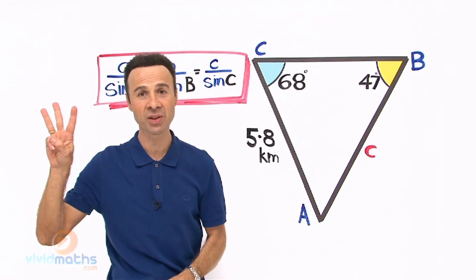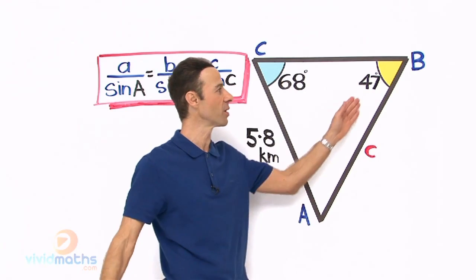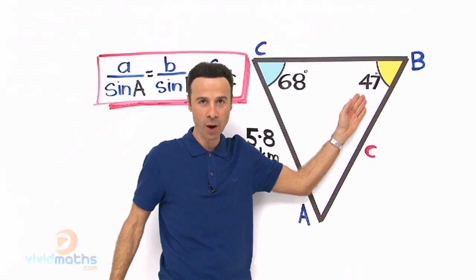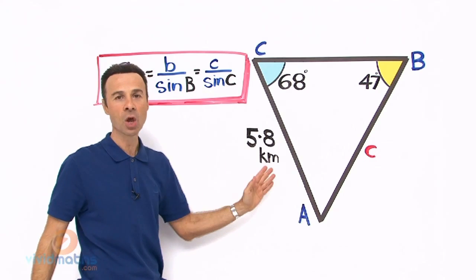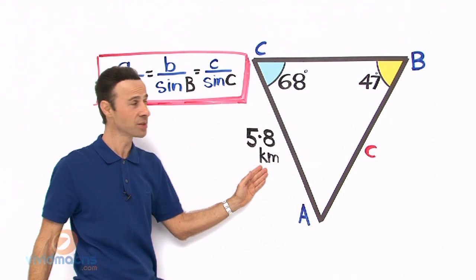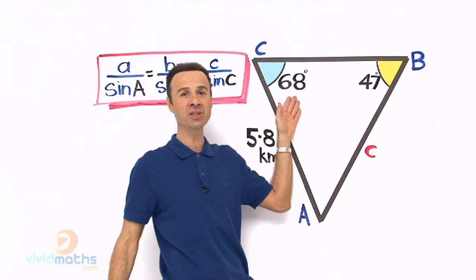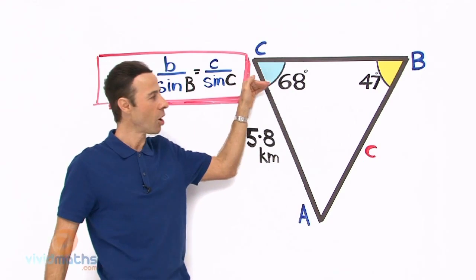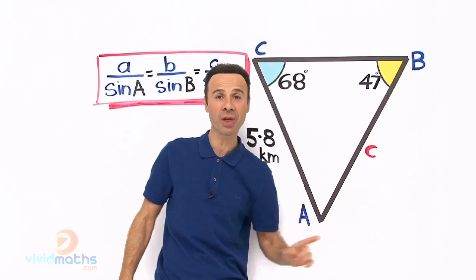So what are the 3 pieces of information that we do have? First of all we have big B, the angle 47 degrees, and opposite that is the length 5.8 kilometers. Up here the other piece of information is 68 degrees, that is big capital C, opposite the little c pronumeral that we are looking for.